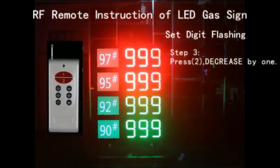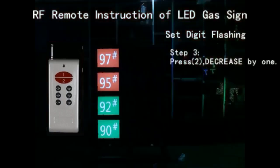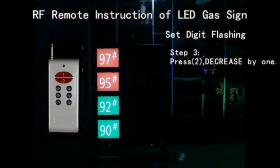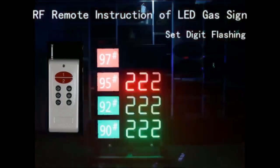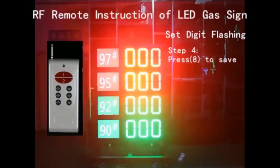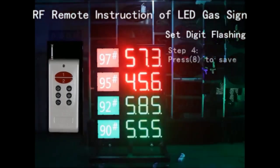Step 3: Press button 2, the flash speed will decrease by 1. Step 4: Press button 8 to save all programming.